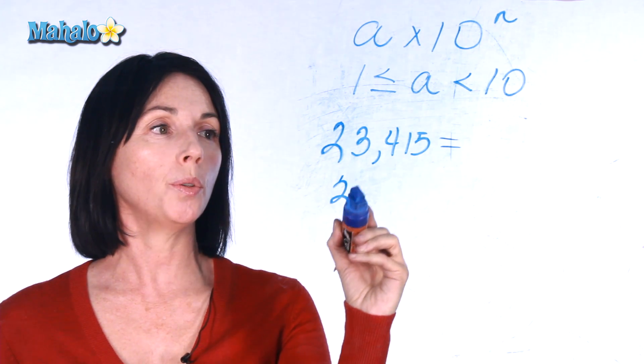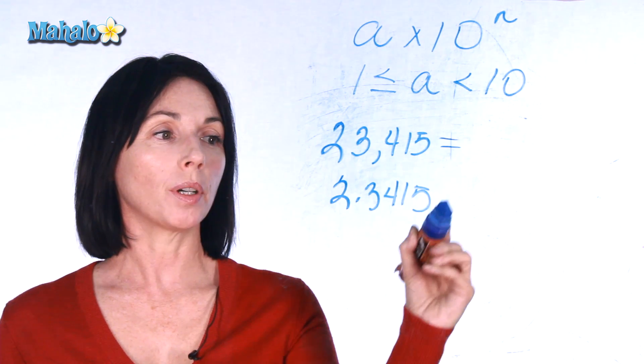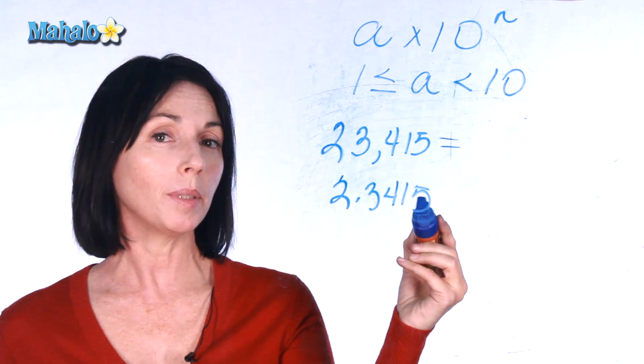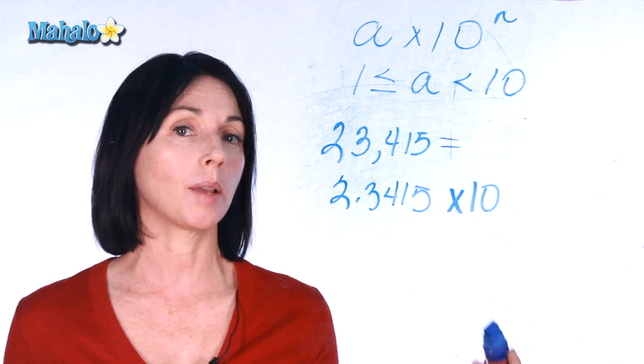So, if I wrote 2.3415, this number is greater than or equal to one, but it's still less than ten. And then this is going to have to be multiplied by some power of ten.